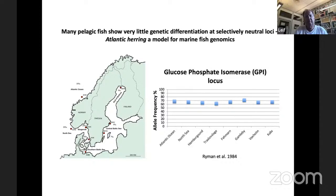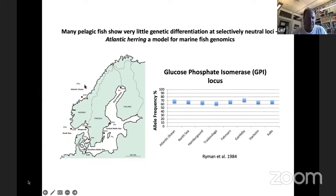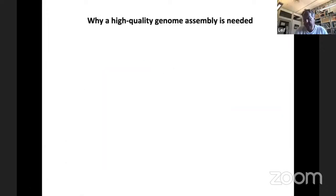Many of these species show very little genetic differentiation at selectively neutral loci. Atlantic herring is a model for this — illustrated by my graduation project from over 40 years ago, before we could use DNA, using isozyme markers across 13 loci. We collected fish from the Atlantic Ocean through the North Sea and Skagerrak, all the way to areas where salinity ranges from 3 to 35 per mille. Remarkably, all these populations had the same alleles at the same frequency, so the data looked like it came from a single panmictic population.